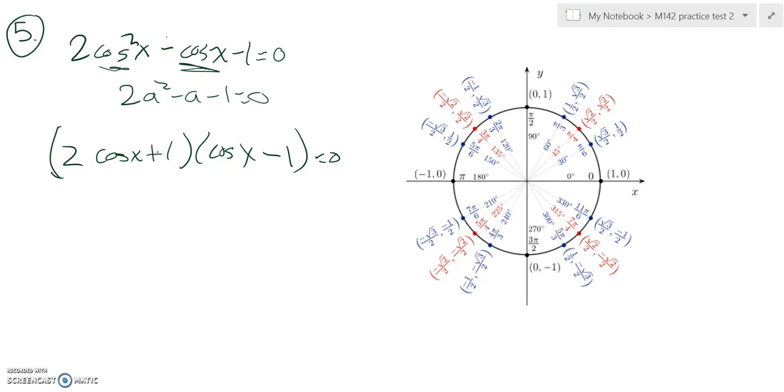And yeah, that seems to work just fine because that'll give me a middle term of positive cosine X. That's a negative 2 cosine X, which gives me a negative cosine X.